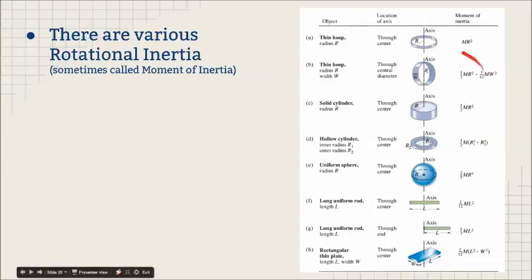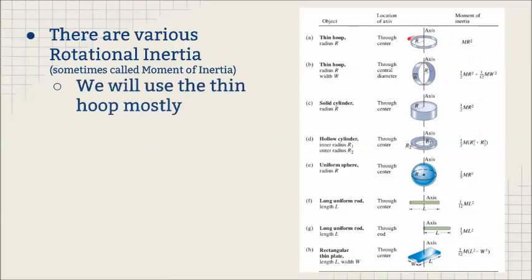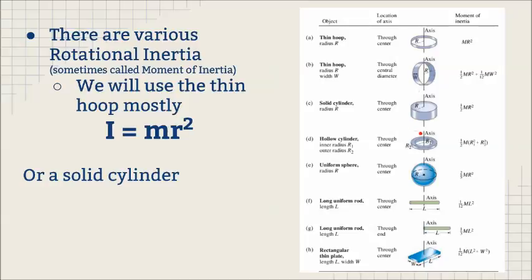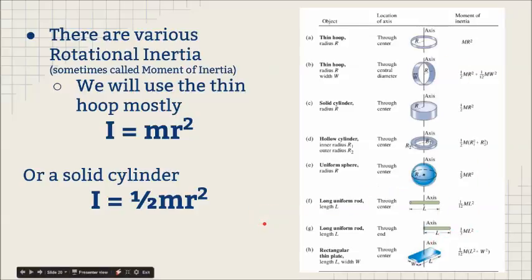You do not have to memorize these. We are mostly going to use this thin hoop formula, MR squared. Sometimes we may use a solid cylinder, that is one half MR squared. Either they'll use a thin hoop or a wheel or something like that, or this one sometimes. But they'll give you the value or the calculation for it. You won't have to come up with these nor memorize all those. So don't worry much about it. You'll see how they work in examples.